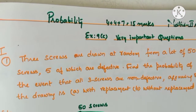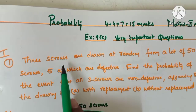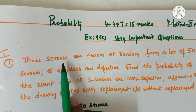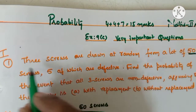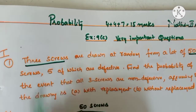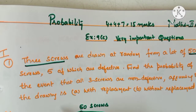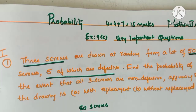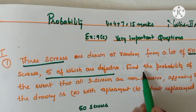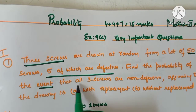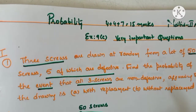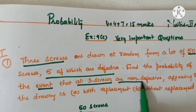Exercise 9c, first question. Roman numeral 1, first question: Three screws are drawn at random from a lot of 50 screws. Out of 50 screws, 5 are defective and the remaining 45 are non-defective. Find the probability of the event that all 3 screws drawn are non-defective.